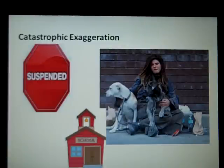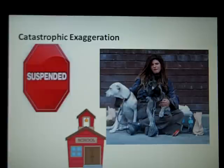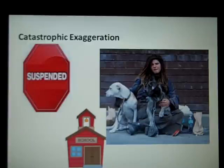The fourth is catastrophic exaggeration: thinking your worst nightmare will come true and that it will be intolerable. Beth failed her test and now fears she'll be kicked out of school, end up homeless, or even get suspended. These things probably won't happen — a more likely reality is that she may need to do better on the next test or retake the class. We have a tendency to exaggerate these things.